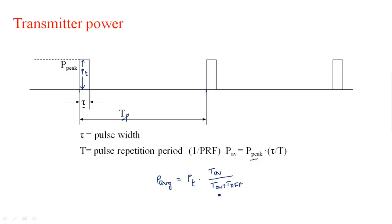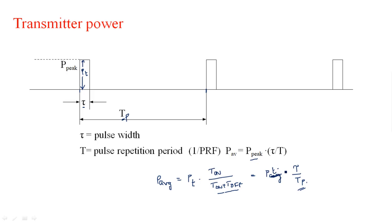T_on plus T_off is the total time period T_pr. So P_average equals P_t multiplied by tau divided by T_r or T_p. The on-period is nothing but pulse width tau. This is the relation between P_average and transmitter power P_t.